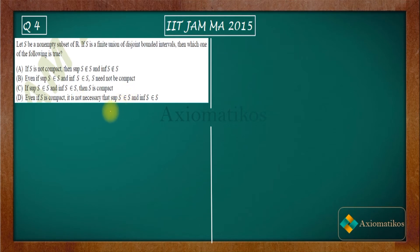I will be doing only one option because it is very easy to see it from here. You see, S is a disjoint union of finite intervals, right? So I will just choose a disjoint interval.